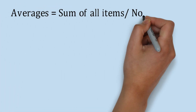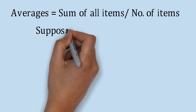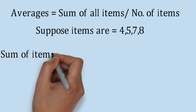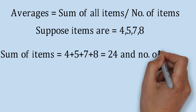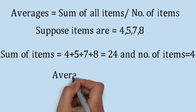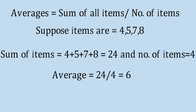We know that average is equal to sum of all items upon number of items. Suppose the items are 4, 5, 7 and 8. So the sum of items will be 4 plus 5 plus 7 plus 8 equal to 24, and the number of items are 4. Therefore the average will be 24 upon 4, that is equal to 6.